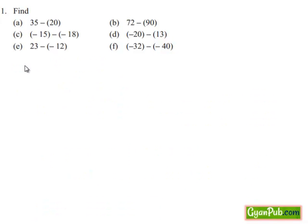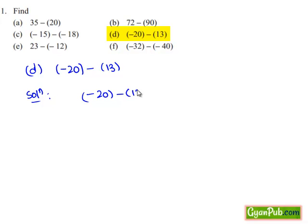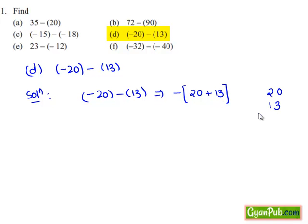Taking down part d: minus 20 minus 13. In the given question we have two negative numbers, minus 20 and minus 13. When we have two negative numbers to add, we take minus as common from both numbers. Here we take minus as common from minus 20 and minus 13, giving us two positive integers to add: 20 and 13. So we add 13 to 20: 0 plus 3 is 3, 2 plus 1 is 3, so we get 33.